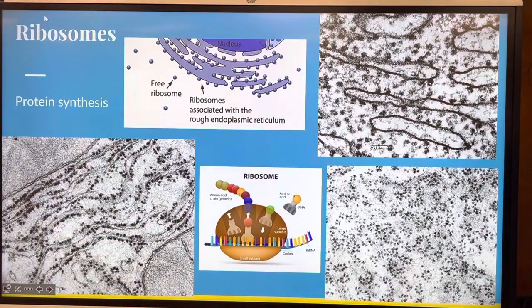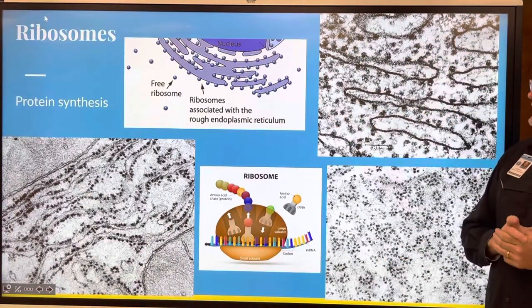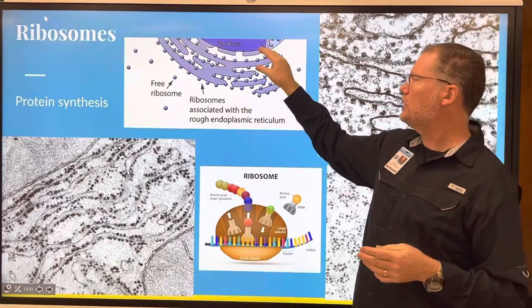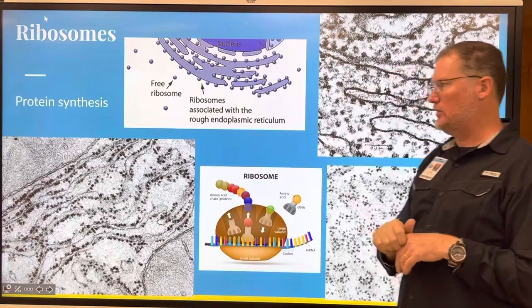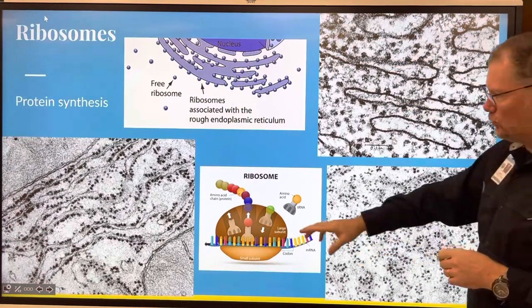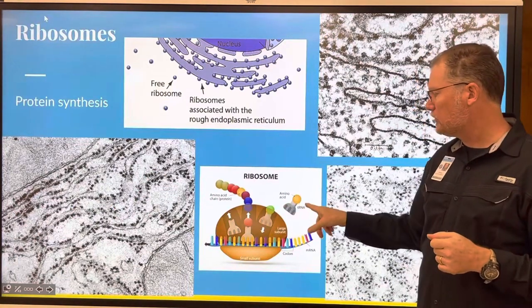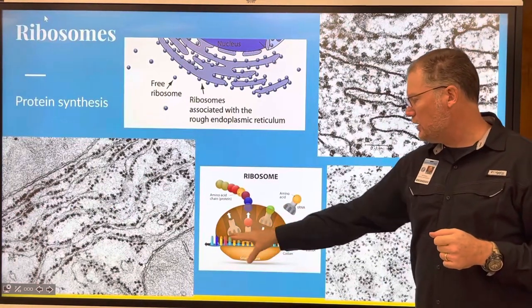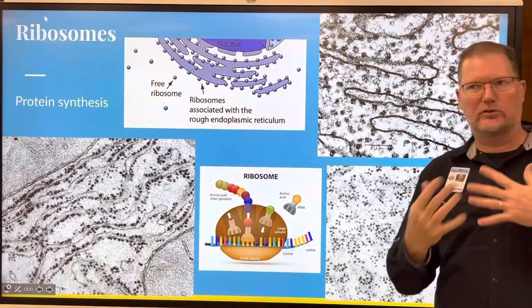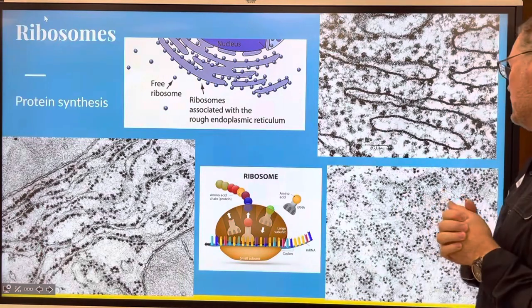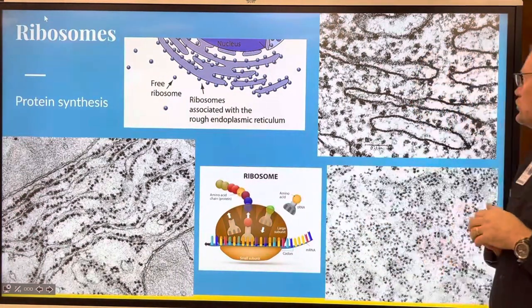And then here's the ribosomes. Remember, they're made in the nucleolus. They are responsible for protein synthesis. There are ones that are associated with the endoplasmic reticulum near the nucleus and free ones in the cytoplasm. So here's what the rough ER looks like. And then remember that the amino acids come in by the transfer RNA. They meet with the messenger RNA. The subunits meet up, the adenines, the thymines, the uracils, the guanines, and they make proteins, chain, right? Certain chain.